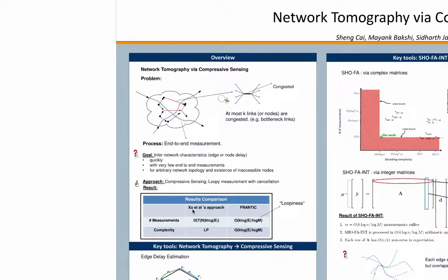Specifically, if we look at Zhu et al.'s work, in their work the number of measurements required has a factor of t_n, which is the mixing time of the network. And the complexity of their decoding is the complexity of solving a linear program, which typically scales polynomially with the size of the network.